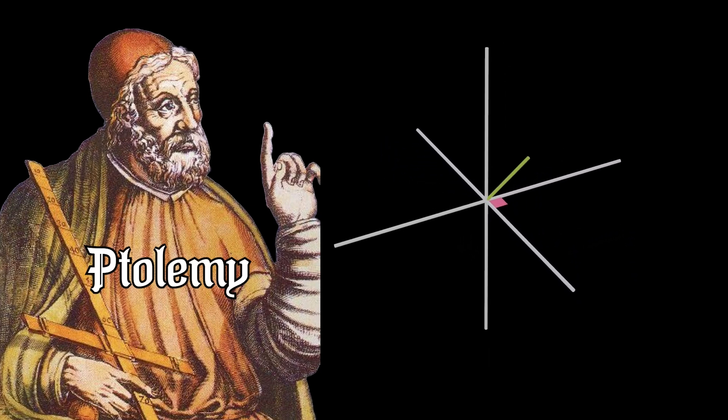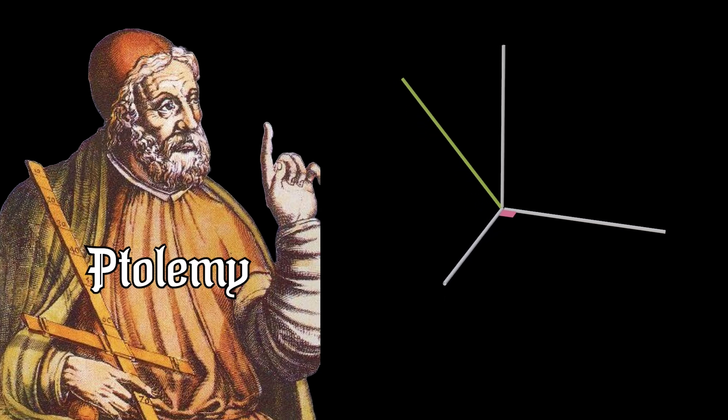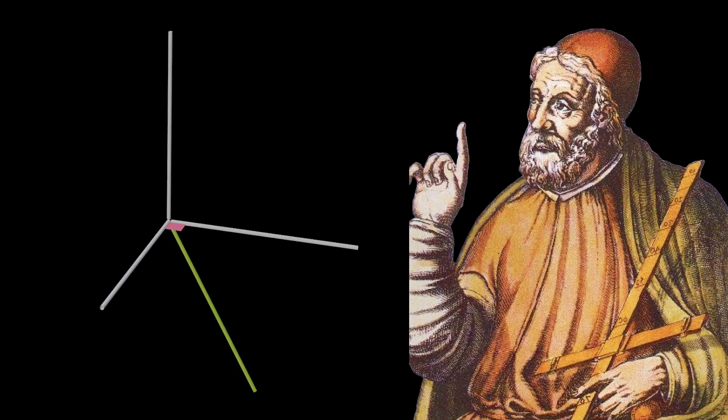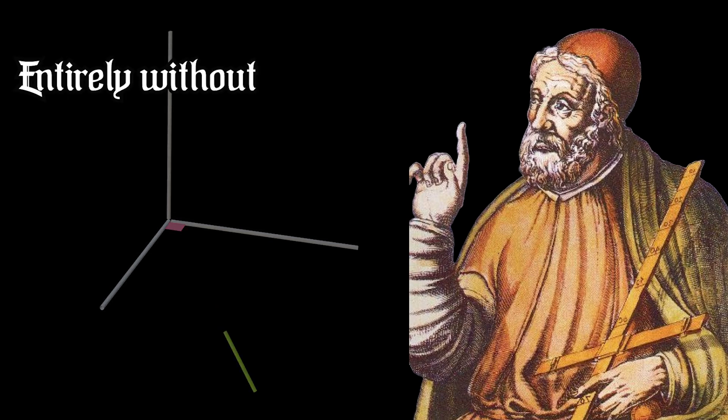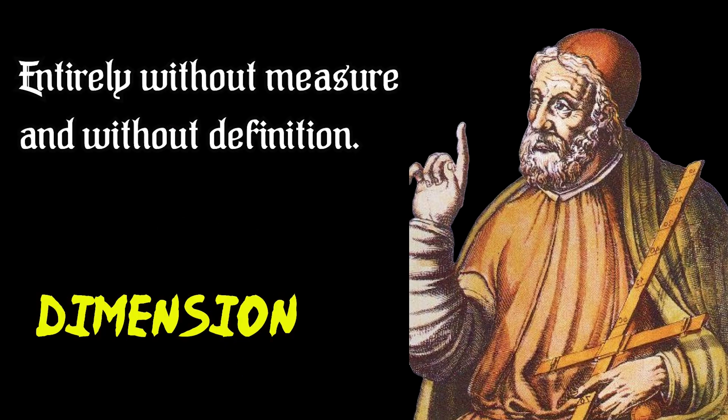Then, he argued, try to draw a fourth line that is perpendicular to the other three lines. He reasoned that no matter how one tries, four mutually perpendicular lines are impossible to draw. So he claimed that a fourth perpendicular line is entirely without measure and without definition. Thus, the fourth dimension is impossible.